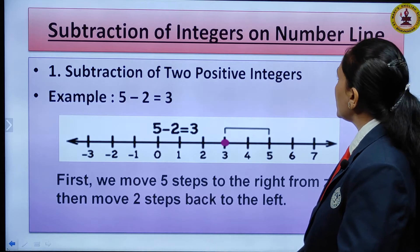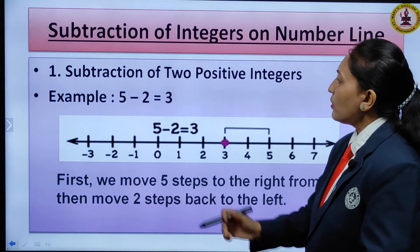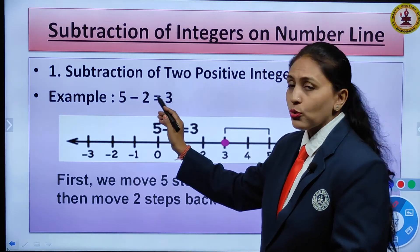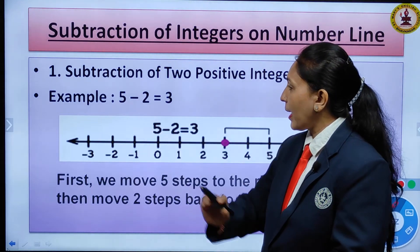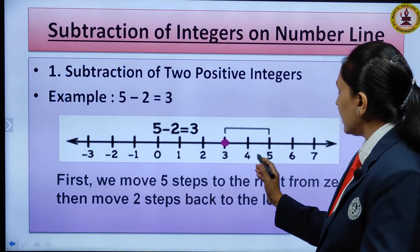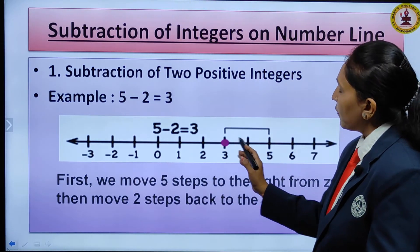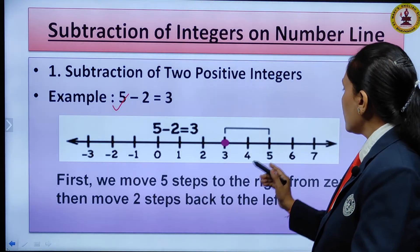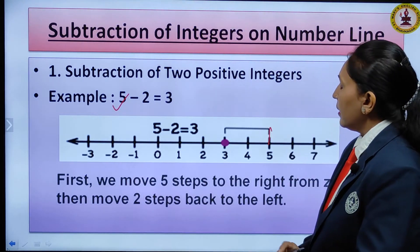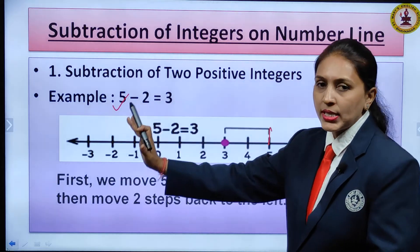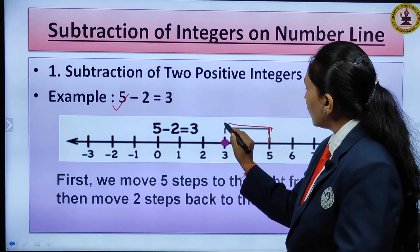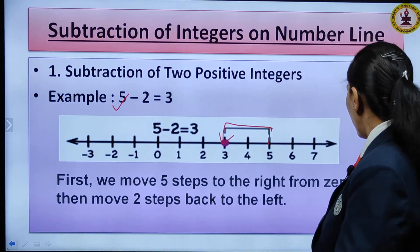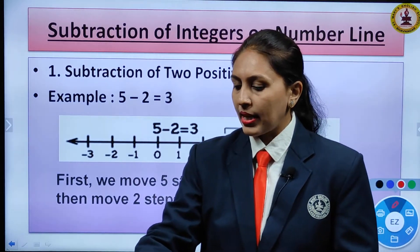Subtraction of integers on the number line. For subtraction of two positive integers, for example 5 minus 2: start at 5 on the positive side of the number line. Minus 2 means move 2 steps to the left. From 5, move 2 steps left and you reach 3.